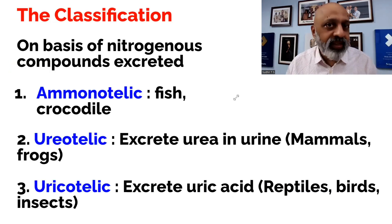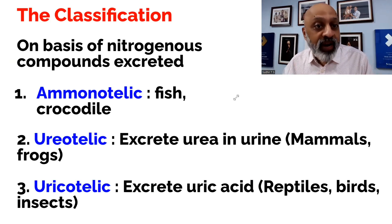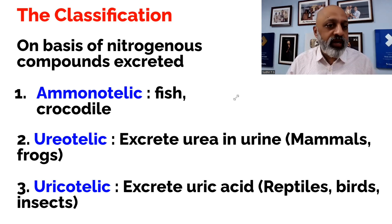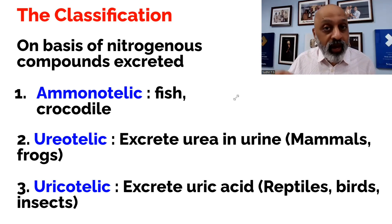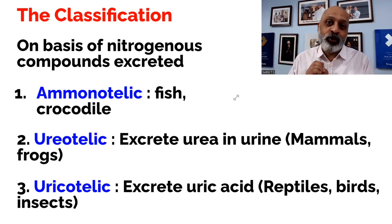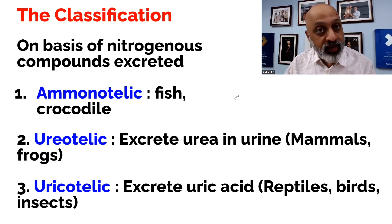Looking at the classification on the basis of nitrogenous compounds that are excreted, living organisms can be classified into three varieties. First is ammonotelic, which is how fish and crocodiles excrete. Then comes ureotelic — people like us — who excrete urea in the urine; this includes mammals and also frogs. Then comes uricotelic, which excrete uric acid, and this includes birds, reptiles, and different forms of insects.